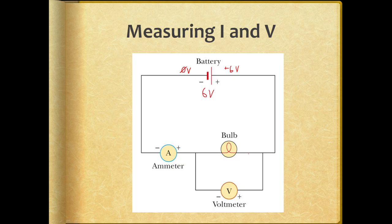Electricity does the same thing in the light bulb. Current moves through the light bulb, that leaves energy behind in the light bulb, and that energy is able to power the light bulb. That current will then exit the light bulb, flow back through the circuit, flow to the negative side of the battery, and then the cycle will begin anew.